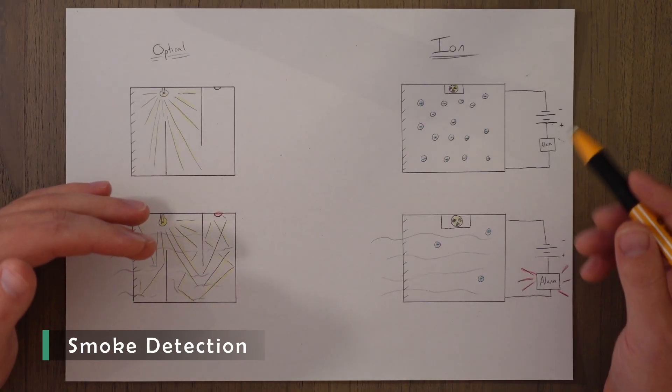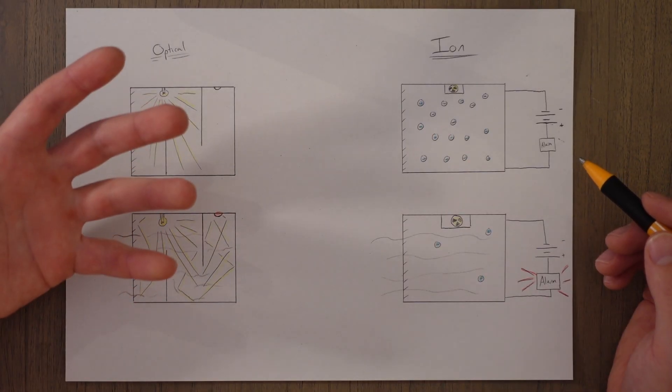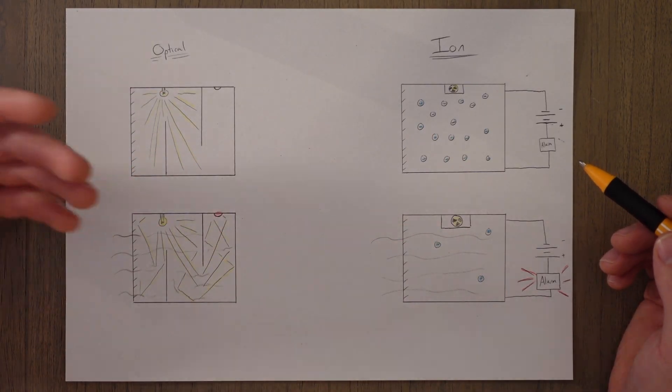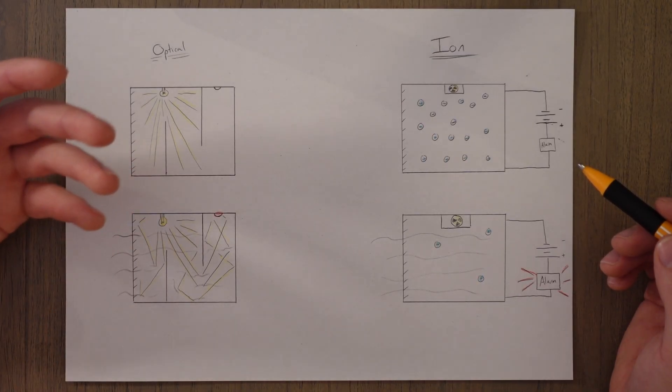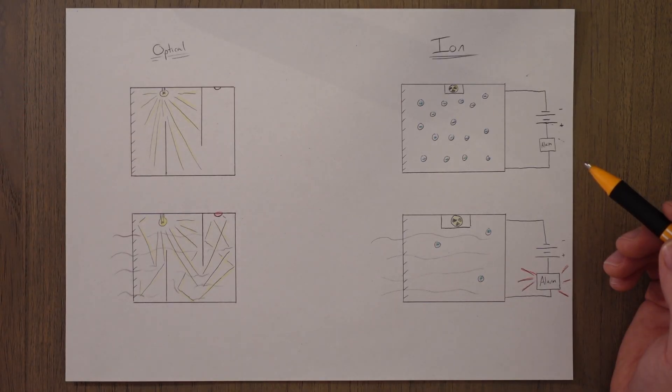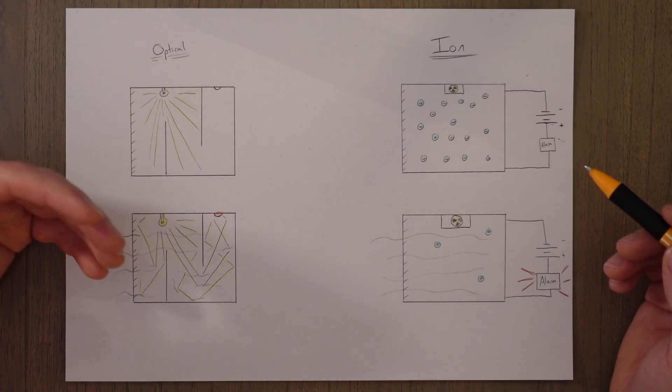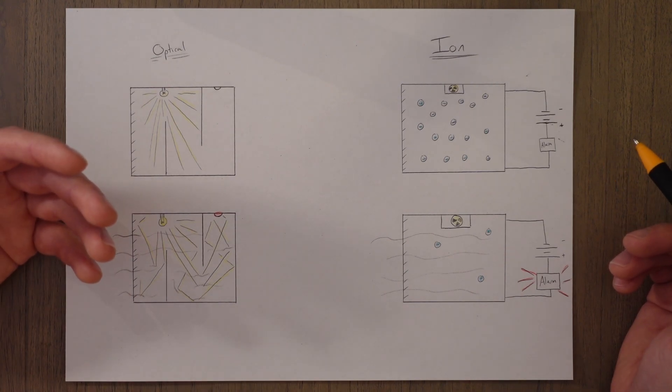There's no smoke without fire as they say, so we can either choose to detect smoke or fire. Smoke detection is often used in compartments like the avionics bay, cargo bays, galleys and toilets, whereas fire detection is mainly used for the engine, APU and the landing gear compartments.